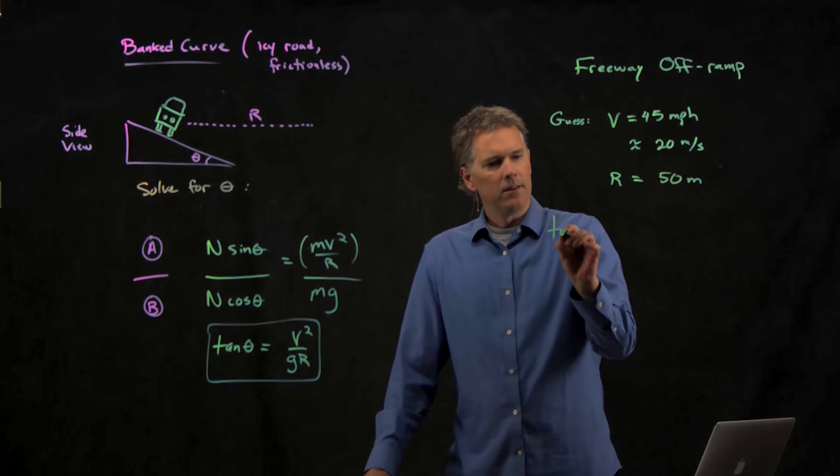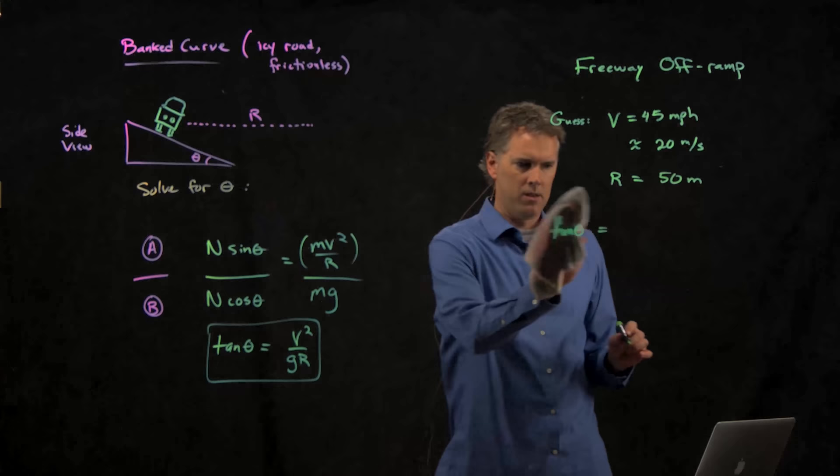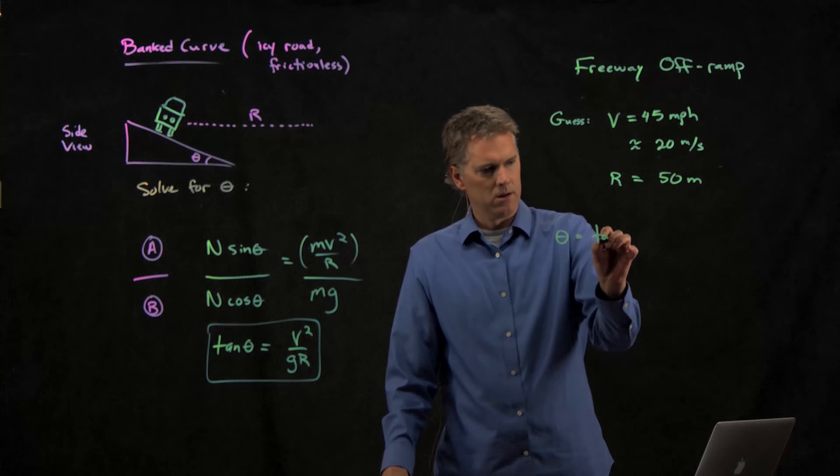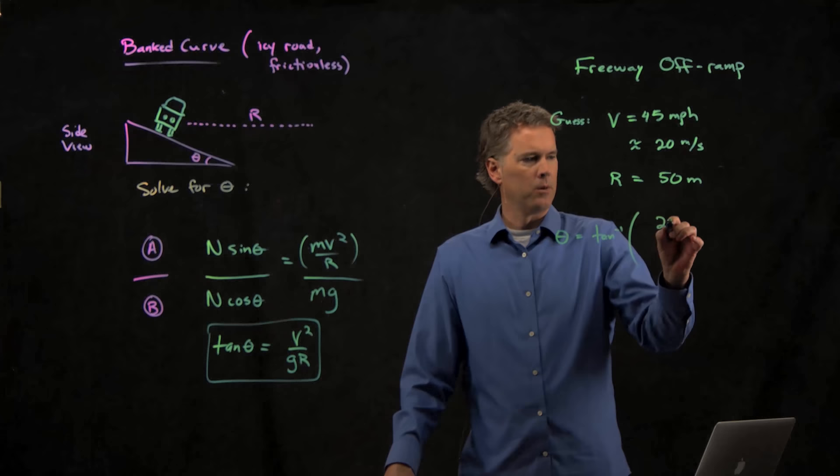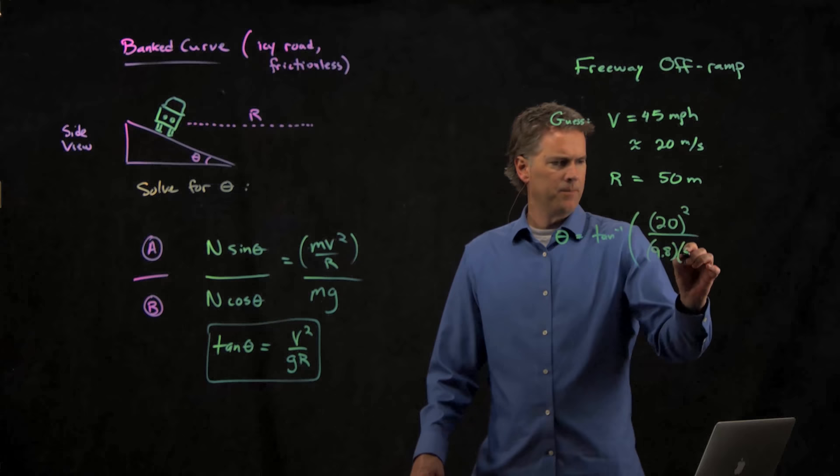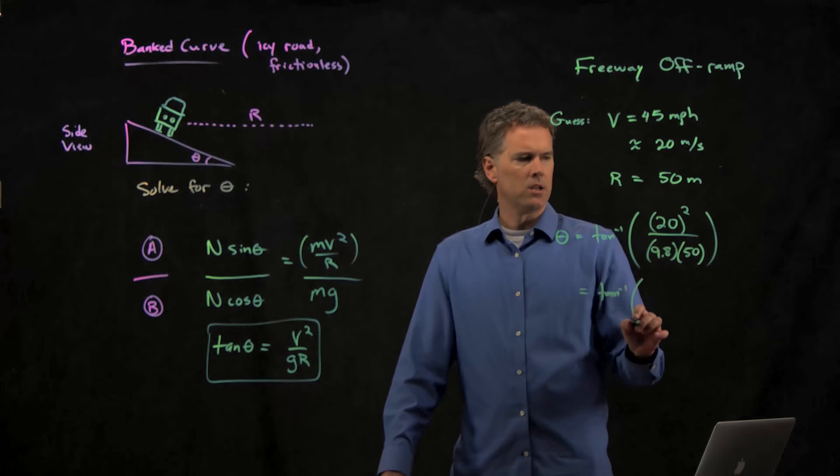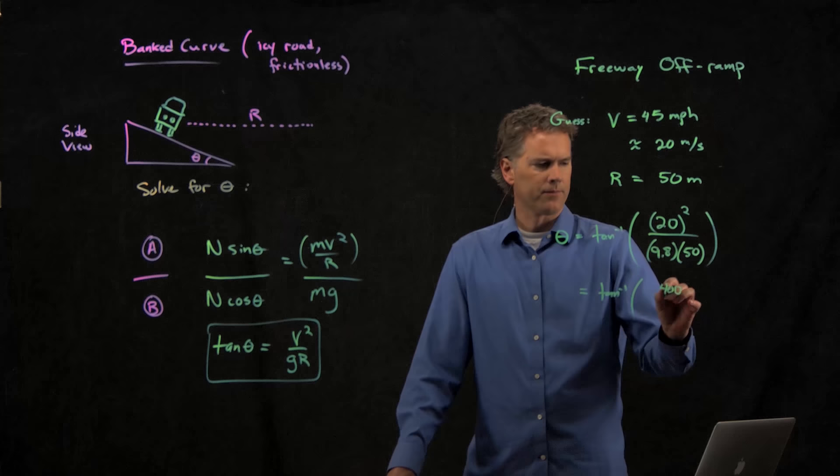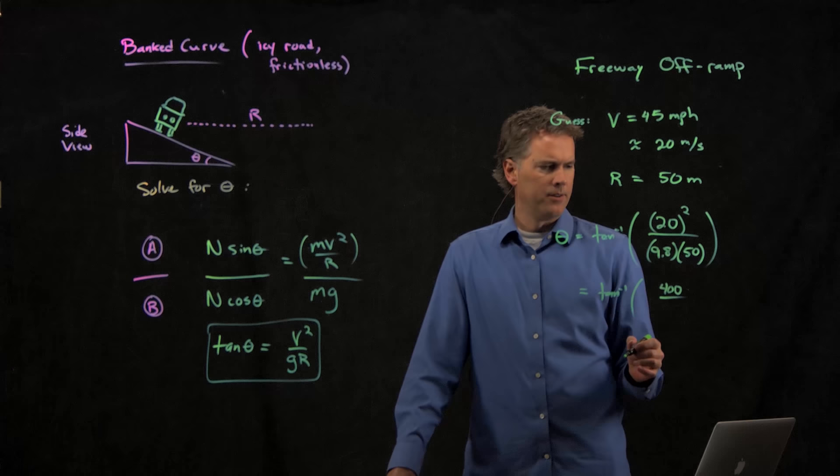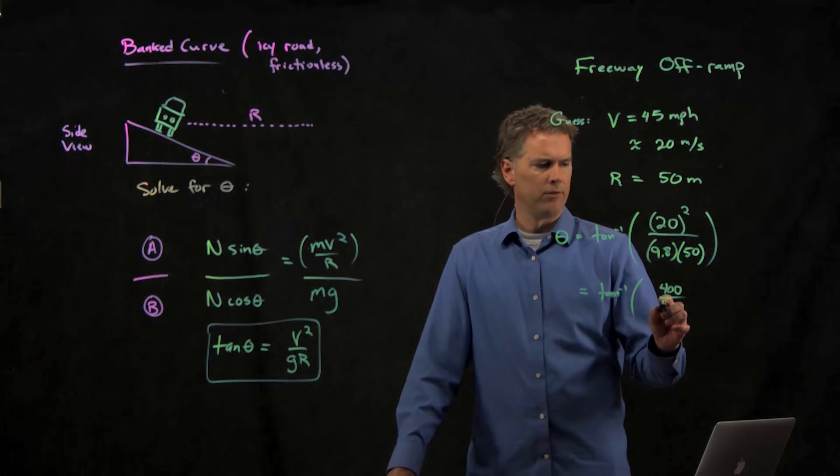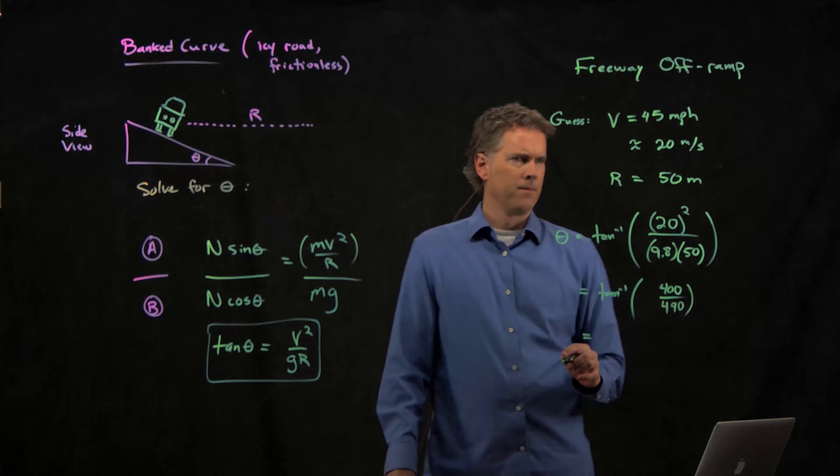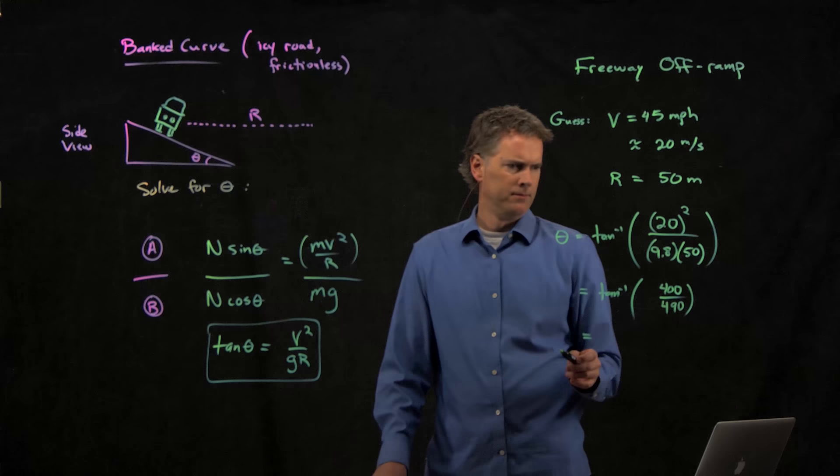So let's calculate what theta is. Tangent of theta. So we need to take the arc tangent. And if we take the arc tangent of v squared, which we said was 20 squared, and we're going to divide by g, 9.8, and r, we said, was 50. And why don't you guys punch that into your calculator and tell me what you get. We've got the arc tangent of 20 squared, which is 400. And in the bottom, we have 50 times 9.8, which is pretty close to 500. It's 490 or something. What do you guys get? 39 degrees.